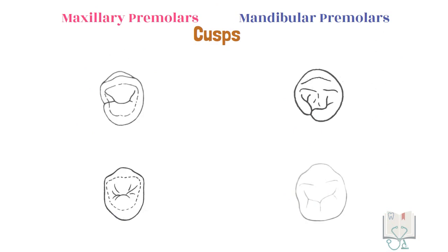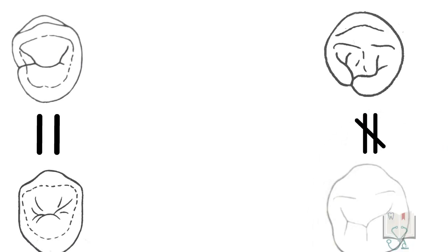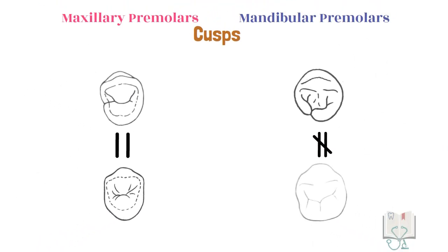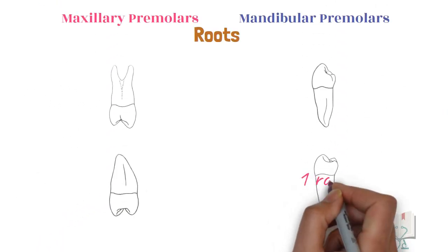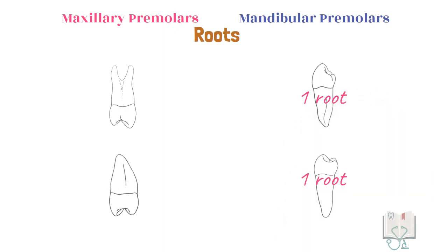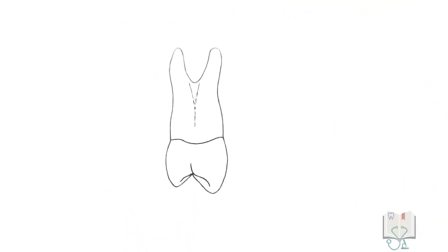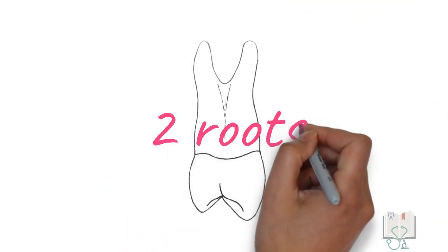Let us see the differences between the premolars of the two arches, starting with some general features. In maxillary premolars, the crown shape is similar to each other. However, in mandibular premolars, they are very different. But if we consider the roots, both mandibular premolars have the same number of roots, whereas in the maxilla they are different, as the first premolar has two roots.